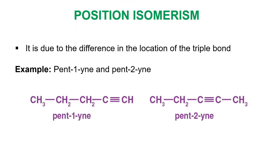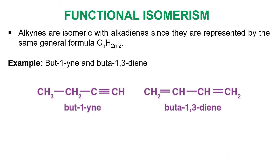The next type is position isomerism, which is straightforward because the position of the triple bond changes the identity of the compound. Terminal alkynes and internal alkynes are position isomers of each other. The last type is functional isomerism — alkynes are isomeric with alkadienes because they are represented by the same molecular formula. For example, but-1-yne is a functional isomer of buta-1,3-diene.